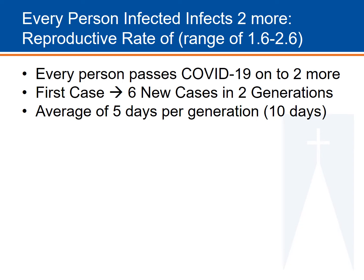In the next graphic, I'm going to show you visually how this disease spreads from one generation to the next. Every person passes COVID-19 on to two more people. So you have a first case who then passes COVID-19 on to two more, and they pass COVID-19 on to two more people. From that first case, over two generations — or on average 10 days — you will end up with six new cases. That's a really fast rate of disease, and it can be reduced with social distancing.